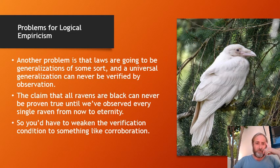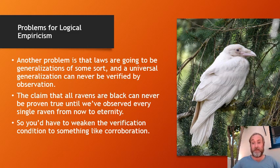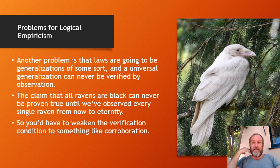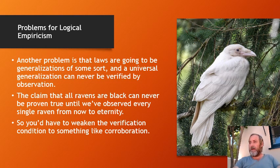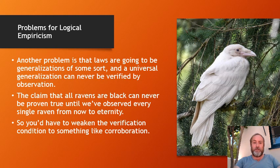There are more problems: laws have to be universal generalizations, and a universal generalization can never be verified by observation — you can't observe everything in the universe, especially everything that will ever exist in the future. So if I want to make a general claim like 'all ravens are black' — which in fact isn't true, here's a white raven — by the verifiability criterion it turns out to be meaningless, because I can never observe every raven. This means you have to weaken the verification condition to something like corroboration: if I observe enough instances, we'll say the law is meaningful.